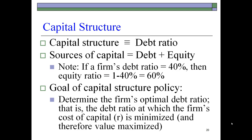Beginning with capital structure, which is virtually the same thing as a firm's debt ratio. There are two key sources of capital available to a firm: debt or equity. Many firms would use a combination of the two. For example, if a firm's debt ratio is 40%, then automatically its equity ratio would have to be 60%.